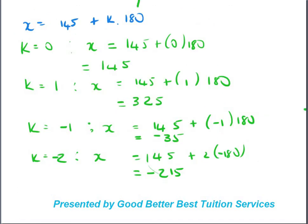For x = 145° + k×180°: substituting k=0 gives 145°; k=1 gives 325°; k=−1 gives −35°; k=−2 gives −215°. Check your solutions against these. The values that fall within [−180°, 180°] are your specific solutions for quadrant four.